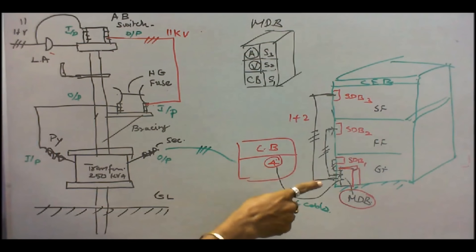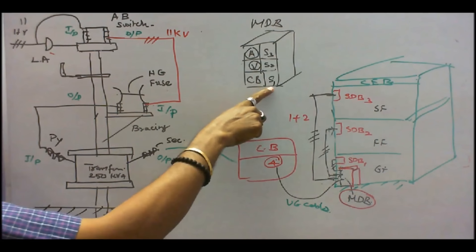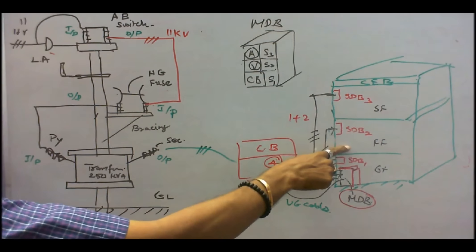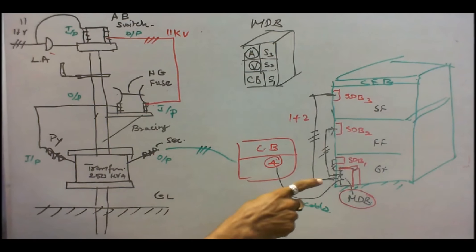Suppose I want to switch off the ground floor for maintenance work, simply I can switch off S1. The power will not be available. Power will be available in the first floor and the second floor. Here the main distribution board acts as a distributor. These all act as feeders. This is the basic difference between a distributor and a feeder.